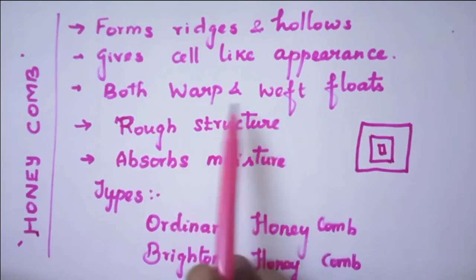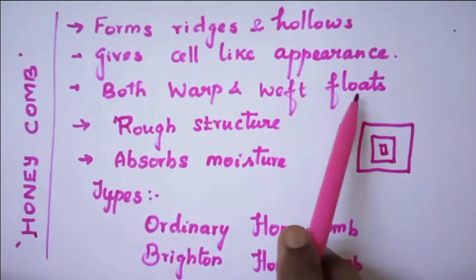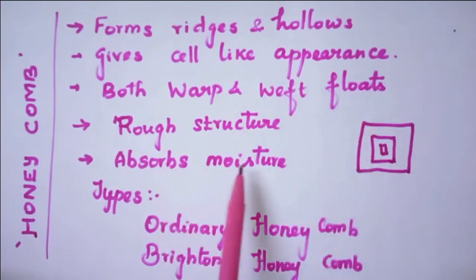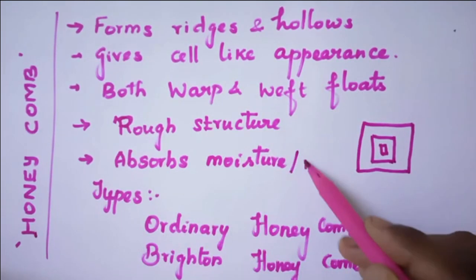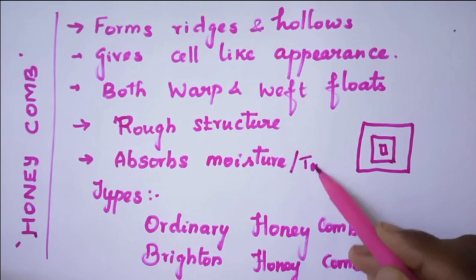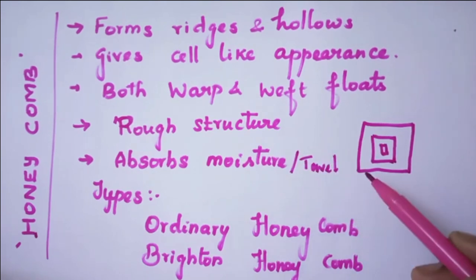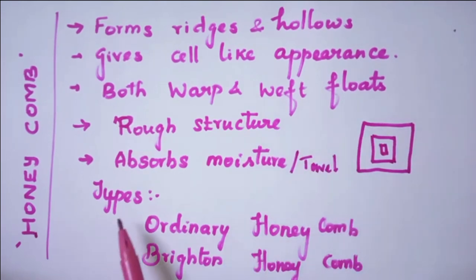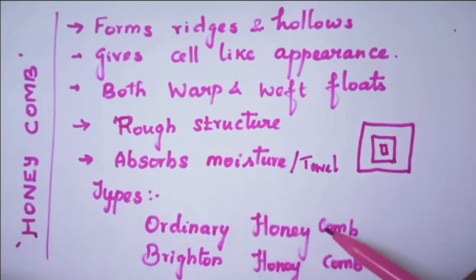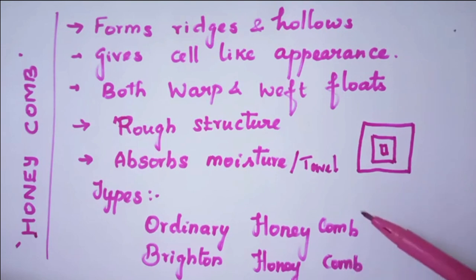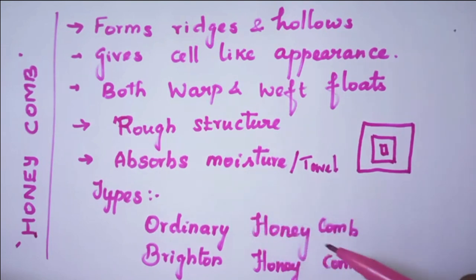If you look at the end-use, it is used for towel fabrics. There are two types of honeycomb weave fabric: one is ordinary honeycomb and another one is brightened honeycomb.